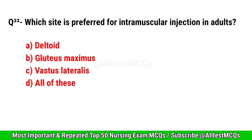Question No. 33. Which site is preferred for intramuscular injection in adults? Right option is A. Deltoid.